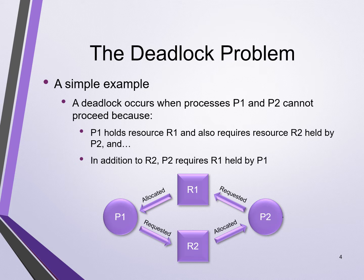Assume two processes and two resources. Process P1 holds or is allocated resource R1. It also needs resource R2 to run, so it sends a request for R2 and enters a wait state until it gets allocated both resources it needs to run. In effect, process P1 is waiting for process P2 to run and give up resource R2, and process P2 is waiting for process P1 to run and give up resource R1. We have a deadlock since neither process can exit their wait state to run.